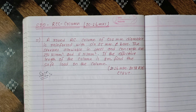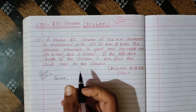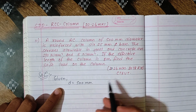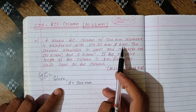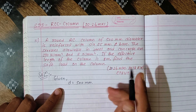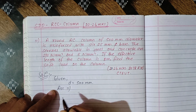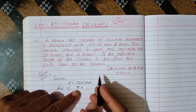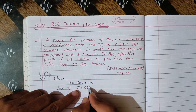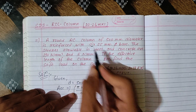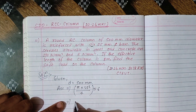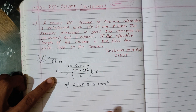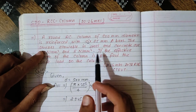Given: a round RC column of 500 mm diameter, so d = 500 mm. It is reinforced with 6 bars of 25 mm diameter. The area of steel = n × (π/4) × d² = 6 × (π/4) × 25² = 2945.24 mm².